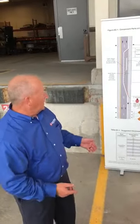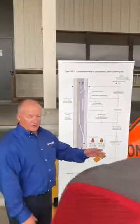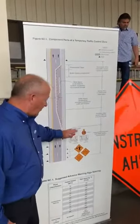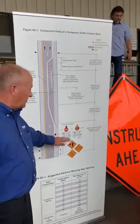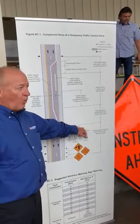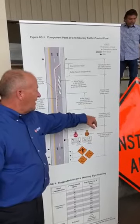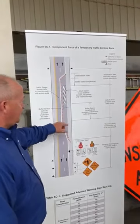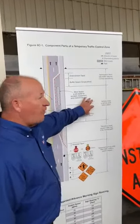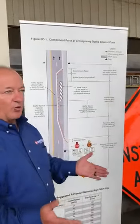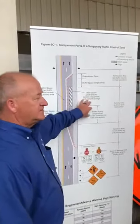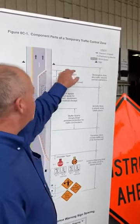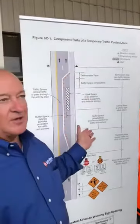In a temporary traffic control zone there are four zones. We're only going to talk about one primarily, but the four zones are: the advance warning area, the transition area where you're starting to divert traffic, the activity area where you guys are working which is critical, and then the termination area where traffic is getting back to normal.